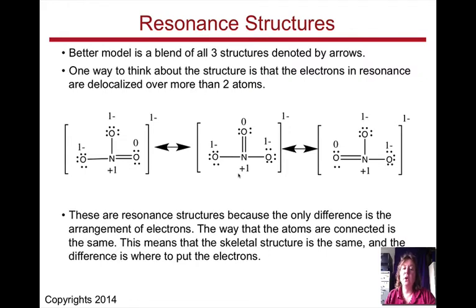These resonance structures are present because the only difference is the arrangement of electrons. We haven't changed the way the atoms are connected, those are the same. The only thing that we're changing is a double versus a single bond. So the skeletal structure is the same, and the difference is where we put the electrons.